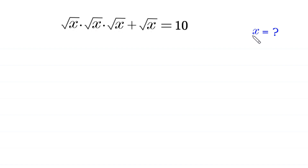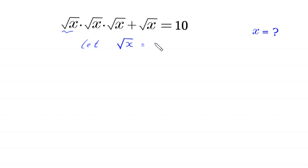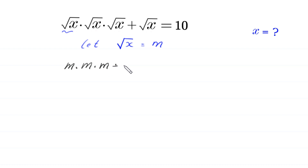So let us start. First of all, we suppose that root x is equal to m. Let root x equal to m. We substitute m in this equation, then this equation will become m times m times m plus m is equal to 10.